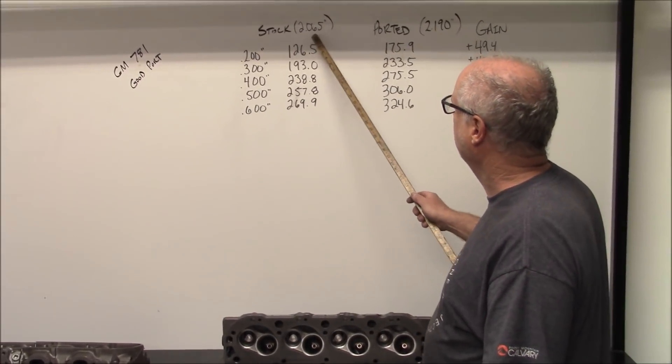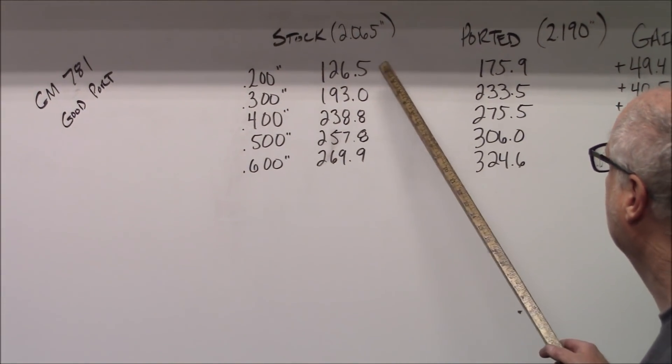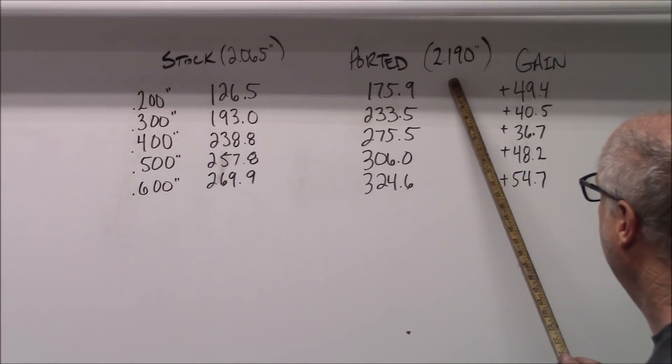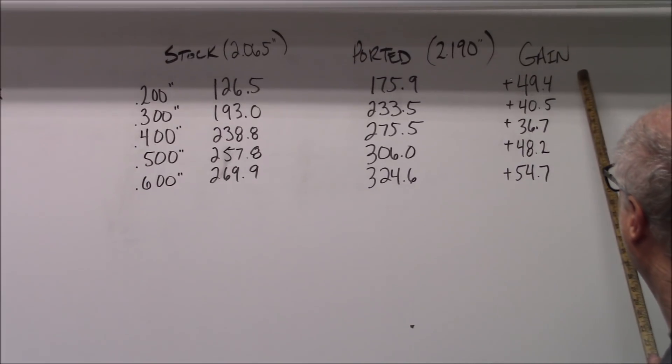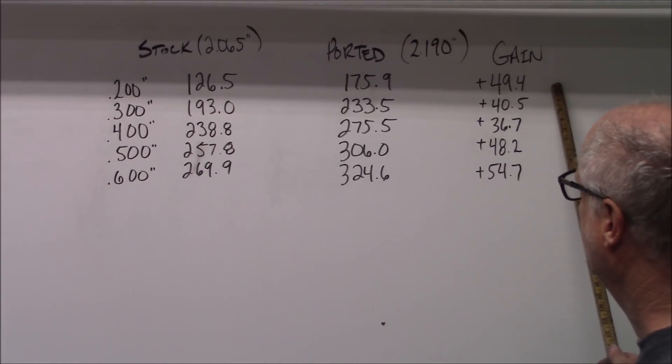This is the flow number for the stock head with the 20650 valve. The ported head with the 2190 valve was 49.4 CFM up at 200 lift.